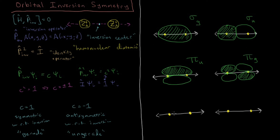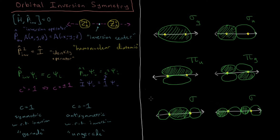One last example: if we have two pz orbitals overlapping along the bond axis constructively, we get an orbital that is positive in the middle and negative on the outsides. Inversion maps positive to positive and negative to negative — keeping the same sign — so this is sigma g, a sigma bonding orbital that is gerade. If they overlap destructively, we get positive, negative, negative, positive, and inversion maps negative to positive and positive to negative — switching signs — so that is sigma ungerade, sigma u.